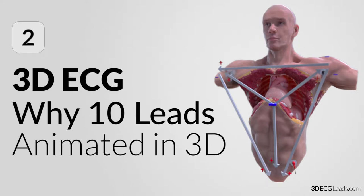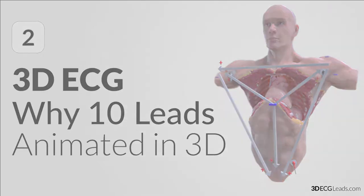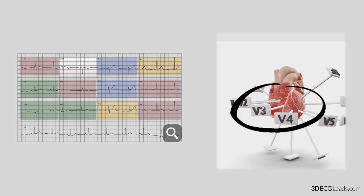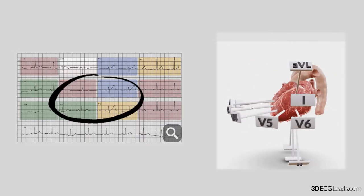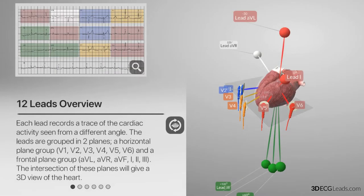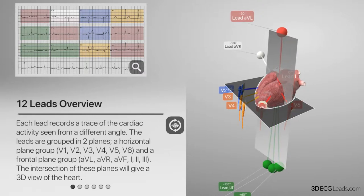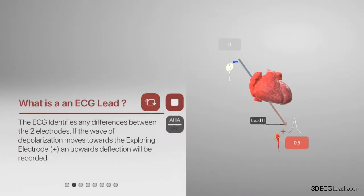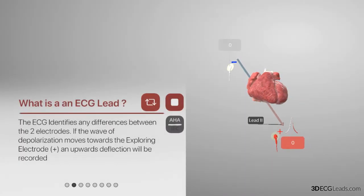Have you ever wondered why a 12-lead ECG has only 10 leads? Or have you ever wondered how you get from this to this? In the next few minutes I will explain through our 3D animation why a 12-lead ECG has only 10 leads, and how the ECG machine is reading the heart's electrical activity.